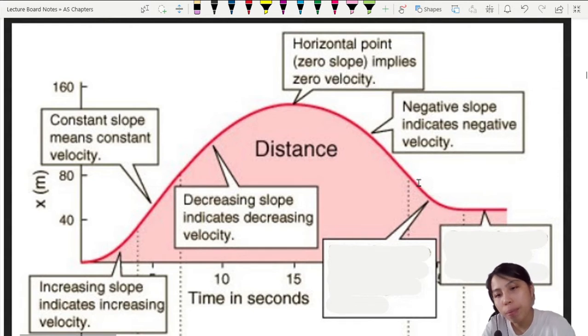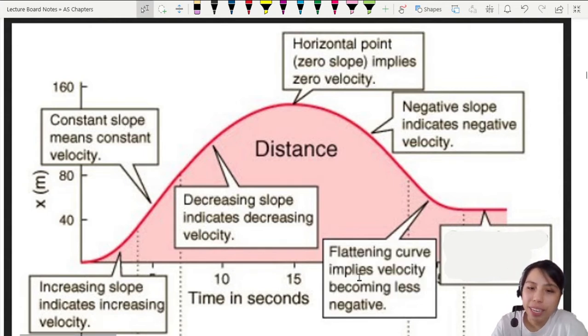Then you come to this part, slope is decreasing, it's becoming flat, flattening out. So that means slope decreasing, velocity decreasing. Once again, you have to make the link. Velocity is less negative. It's going down, yes, but less.